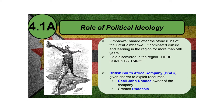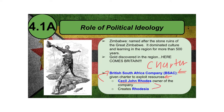Great Britain itself did not colonize the area known as Zimbabwe. It granted a charter to a gentleman named Cecil Rhodes. Cecil Rhodes created a group called the British South Africa Company, or BSAC, which was given a charter to exploit the resources of that region. Eventually, the whole area of Zimbabwe became known as Rhodesia, named after Cecil Rhodes.